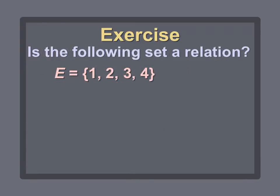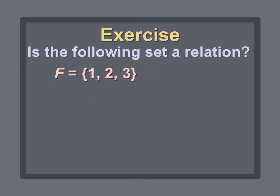Here's the question: is the following set a relation? Recall the definition — a relation is a set of ordered pairs. We have the braces, so we definitely have a set, but inside the set, do we have ordered pairs? No — we just have numbers. This could be a domain or a range, but it's definitely not ordered pairs. So no, it's not a relation. Similarly, set F is also not a relation, because it is not ordered pairs.